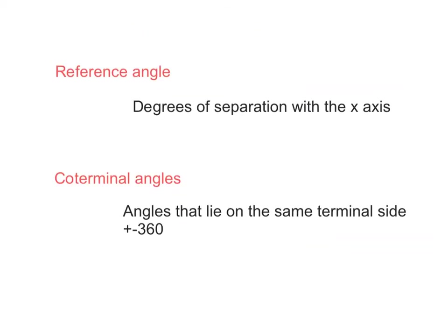Two pretty common terms you should be familiar with are reference angles - degrees of separation with the x-axis - and coterminal angles, which are angles that lie on the same terminal side. The trick to getting coterminal angles is you just add or subtract 360.